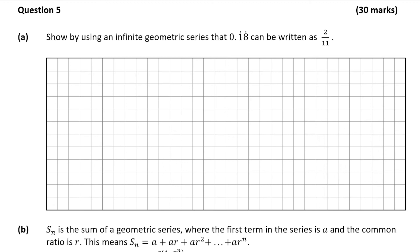Hello and welcome to the video. This is Matthew and we're going to look at question 5, which is a 30 mark question on sequences and series. Question 5 part a is worth 10 marks and it says to show, by using an infinite geometric series, that 0.18 recurring — 0.181818... and so on — can be written as 2 over 11.